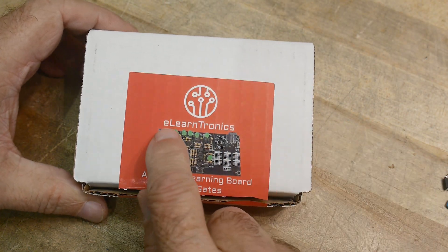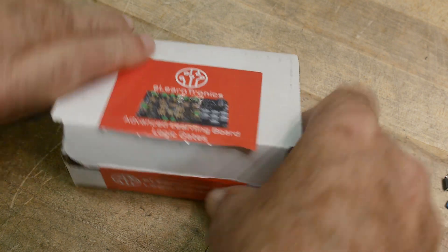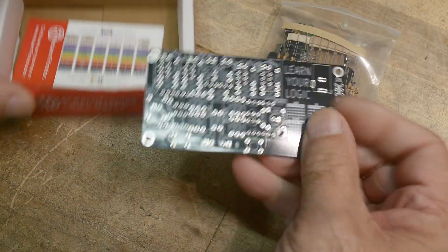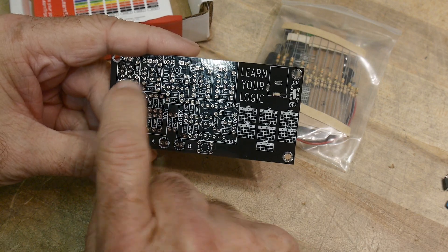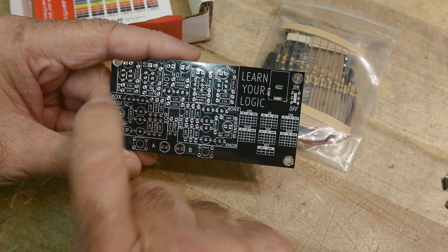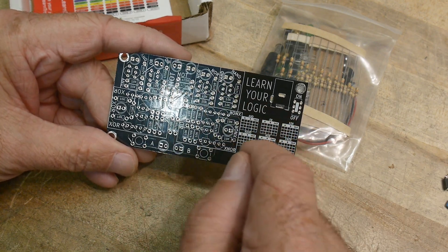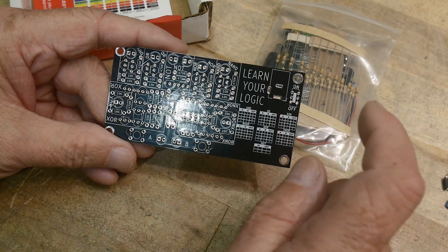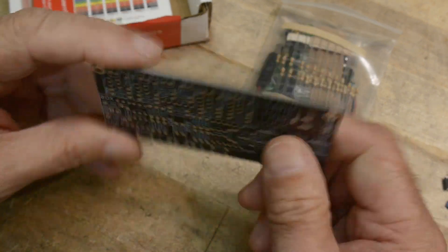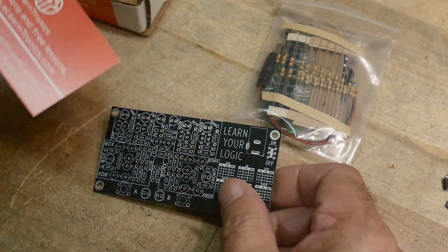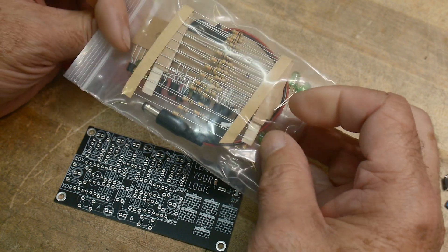Okay, I got this for Christmas. It is an E-learntronics advanced learning board for logic gates. Here's the little PC board - learn your logic. It's a whole bunch of transistor level gates: an AND gate, OR, NOT, NOR, NAND, XNOR, XOR, and here's the logic for all of the truth tables. Pretty cool. I don't see an instruction manual anywhere, but I bet it's self-evident. There's probably a website somewhere.